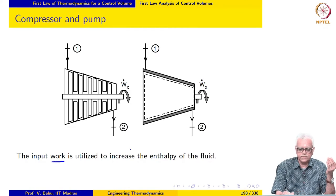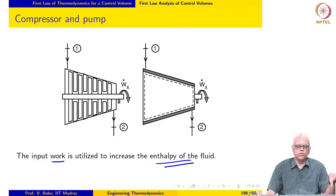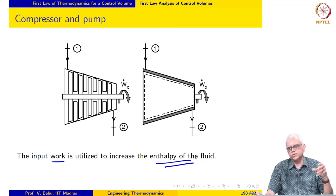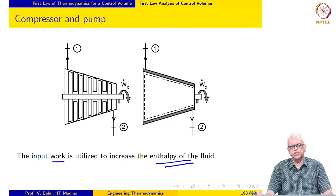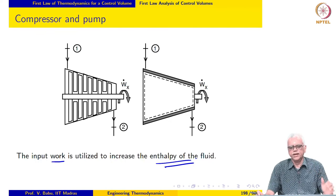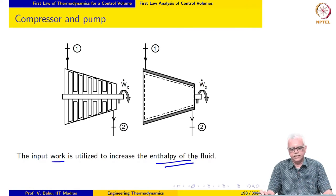The input work is utilized to increase the enthalpy of the fluid — whereas in a turbine the enthalpy of the fluid is converted to output work, here the work that is put in is converted to increase the enthalpy and most importantly to increase the pressure of the fluid. The compressor usually works with a prescribed pressure ratio between the outlet and the inlet.